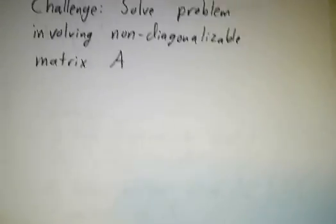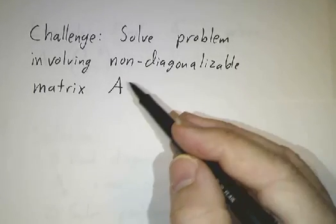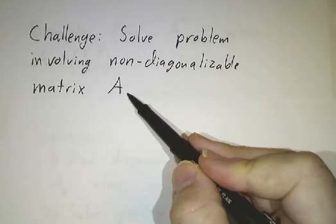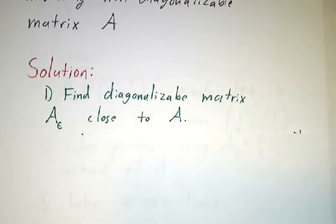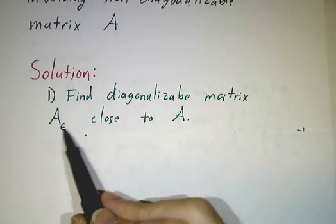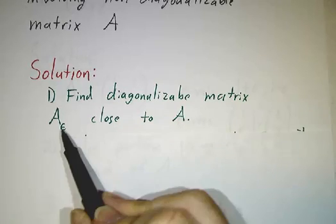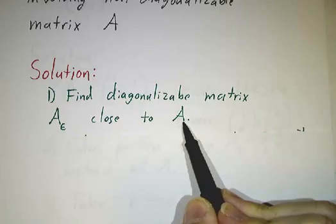So if somebody gives us a non-diagonalizable matrix and gives us a problem that you have to solve, it might be a differential equation, might be a difference equation, might be just finding a power of the matrix. If you have some problem involving a non-diagonalizable matrix, the game is we're going to find a diagonalizable matrix that's close to the non-diagonalizable one by adding epsilon to some of the entries.